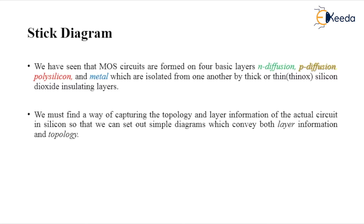In MOS circuits fabrication, the four basic layers — n-diffusion, p-diffusion, polysilicon, and metal — are all isolated from each other by silicon dioxide, which is an insulating material. We must find a way of capturing this topology, so whatever is fabricated should be represented. We need simple diagrams to convey the layer information as well as topology — that is what our stick diagrams do.